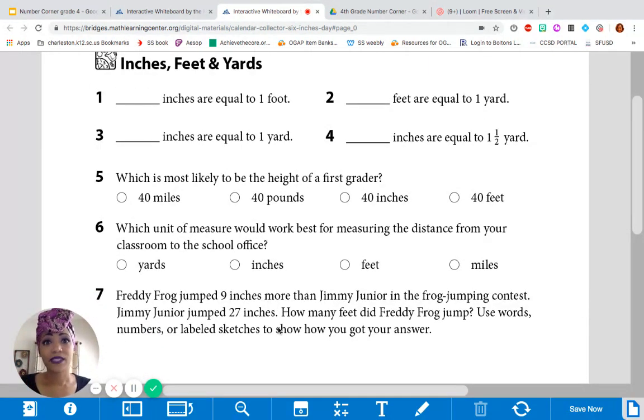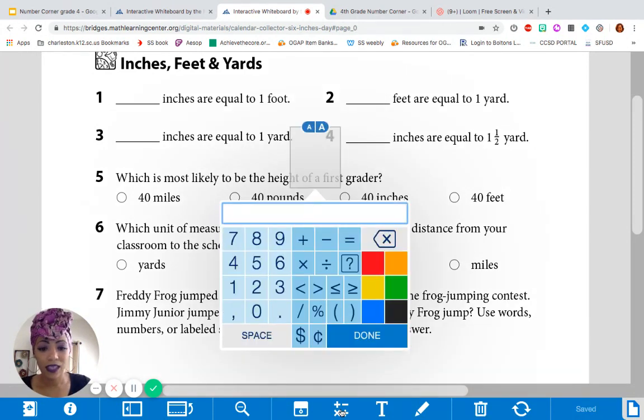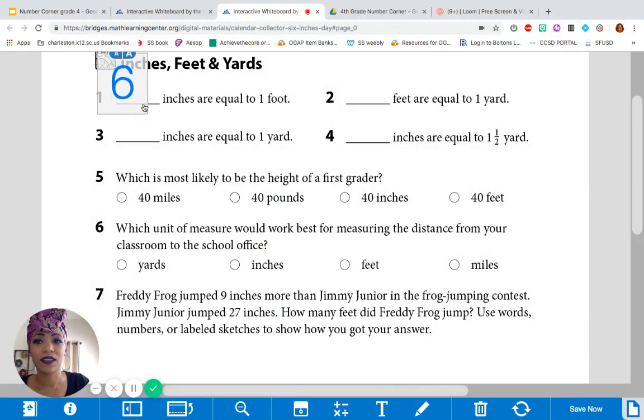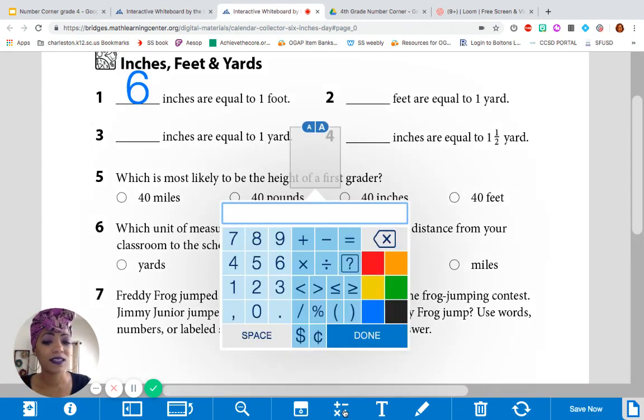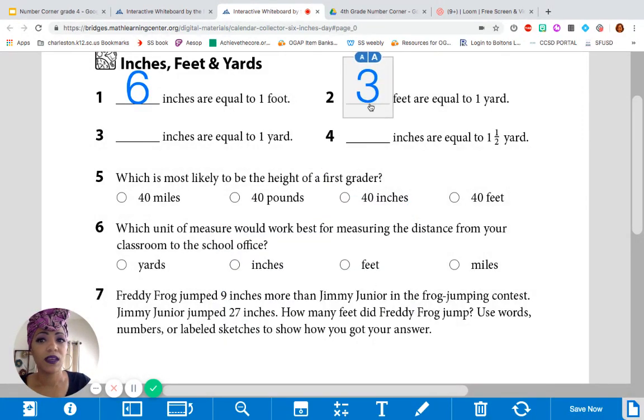Okay. Looks like we have some conversions to do. And, I think you guys can do it because we've worked so hard this whole month on understanding our calendar collector and converting our inches to feet and our feet to yards. So, blank inches are equal to 1 foot. You guys know this. How many inches are in a foot? Yeah. 6 inches in a foot. Very good. So, I'm going to put my 6 here. Well, then it says, blank feet are equal to 1 yard. I think you guys know this one, too. How many feet are in a yard? You got it. 3 feet in a yard.